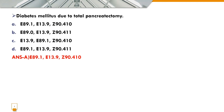Next: diabetes mellitus due to total pancreatectomy. The correct answer is E89.1 — post-procedural hypoinsulinemia, then E13.9 — other specified diabetes mellitus without complications, then C90.410 — acquired total absence of pancreas.